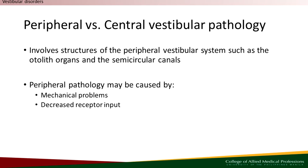Now let's move on to distinguishing between peripheral and central vestibular pathology, as understanding the underlying mechanisms is crucial for effective management. Peripheral vestibular pathology involves structures of the peripheral vestibular system, such as the otolith organs and semicircular canals, and may result from mechanical problems or decreased receptor input. If the issue lies within the central nervous system, this categorizes as central vestibular pathology, which could include conditions like stroke where the vestibular apparatus remains intact but central processing is compromised. In cases of central vestibular pathology, adaptation is crucial, while peripheral vestibular pathology often necessitates mechanical treatments.